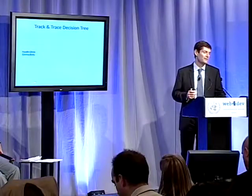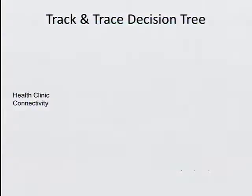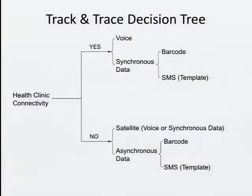Now let's concentrate on track and trace — the bread and butter of supply chains. A key question is whether the health clinic has connectivity. If they do, they can either report by voice or send data. This data can be acquired via a barcode linked with GPS or other devices that tell us where units have arrived, or we can use SMS templates. If there is no connectivity, we can consider satellite connectivity or use an asynchronous offline mode: we record and store data on the device and send it whenever connectivity is available.